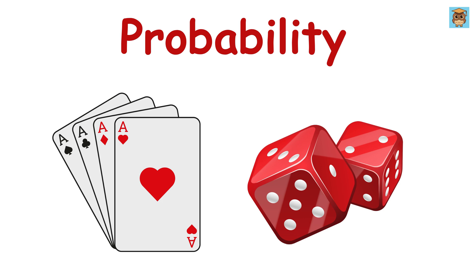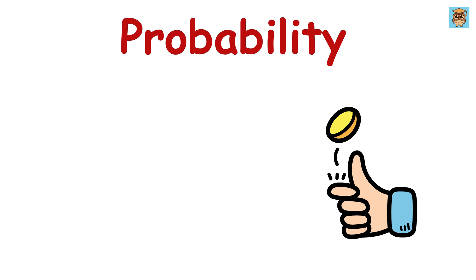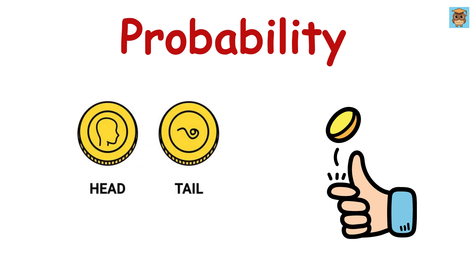Probability is just about figuring out how likely something is to happen. If you flip a coin, there are two possible outcomes: heads or tails. Each one has a one out of two chance, so the probability of getting heads is one divided by two.